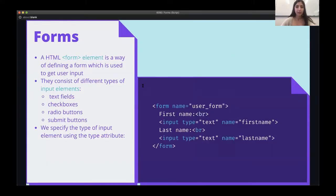Let's start with how to make a form in HTML. The basis of making a form in HTML is the form element. This element is a way of defining a form, and inside this tag we put the contents of the form, which is usually things like labels. Here you can see we've got a first name label and last name label and different types of input elements. In this example we have a form tag with first name and last name input elements.